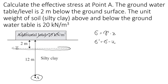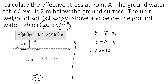First, let's estimate the total stress. It consists of the additional load of 25 kN per square meter, plus the contribution from 12 meters of silty clay. The unit weight of silty clay is 20 kN per cubic meter, so we write 20 times 12. That gives us a total stress of 265 kN per square meter.